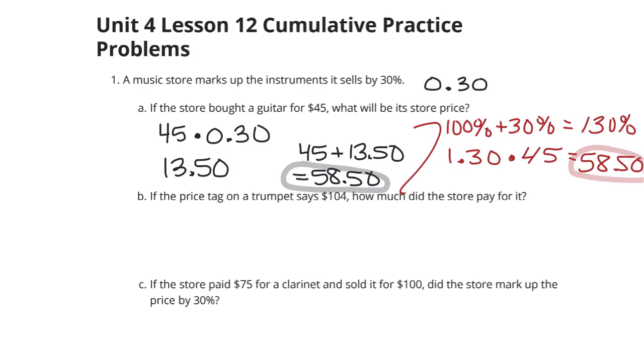What about question 2? If the price tag on a trumpet says $104, how much did the store pay for it? If we use the red part of question A here as an example, we took 130%, multiplied it by what it paid. So we'll call that the store paid, that was going to equal our store price.